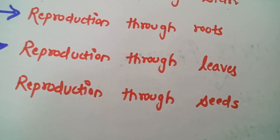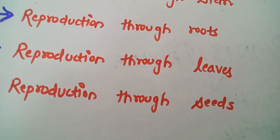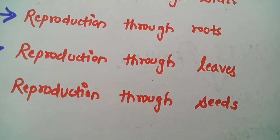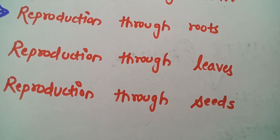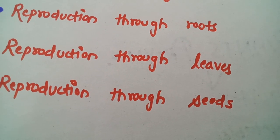Reproduction through seeds. When a plant reproduce with the help of their seeds is known as reproduction through seeds. For example bean seeds or chickpeas.